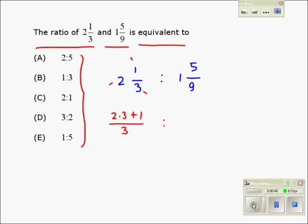Let us do this on the right hand side. We would have 1 times 9 plus 5, divided by the same denominator 9. So here it becomes 6 plus 1, 7 over 3. The ratio is also written as a division sign, and on the right hand side it becomes 9 plus 5 is 14 over 9.